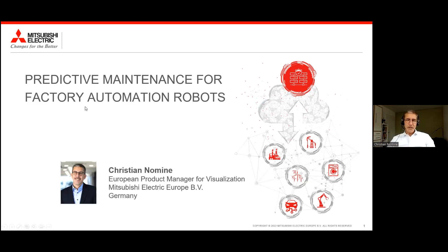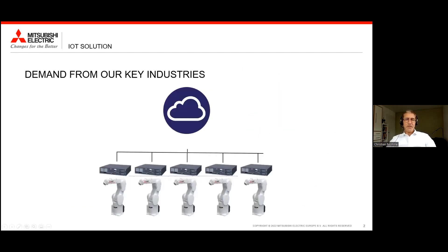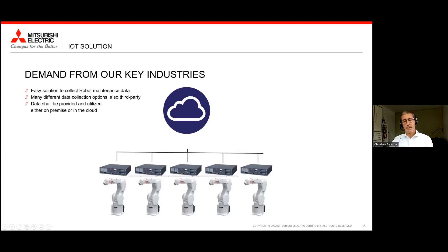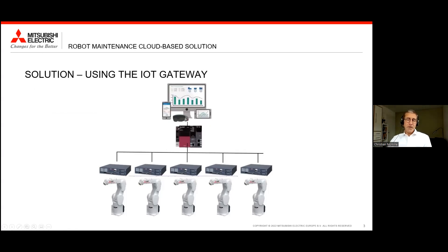It all started with demands from our key industries to actually provide an easy solution to collect robot data from many robots in a typical factory. There are demands also to connect to third-party equipment as well, not only Mitsubishi. This is a typical brownfield scenario and the data shall be provided and utilized depending on the end customer either on-premise or in the cloud. Mitsubishi Electric came up with a solution based on our IQ-R modular PLC system — we call this the IoT gateway solution.